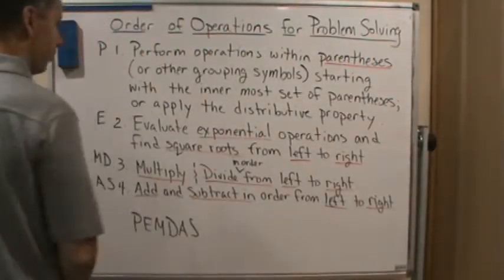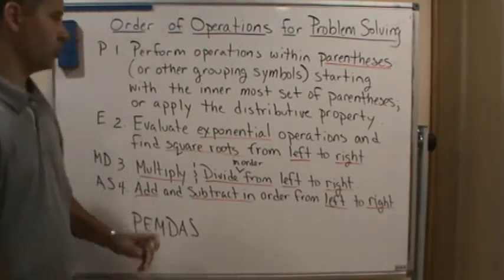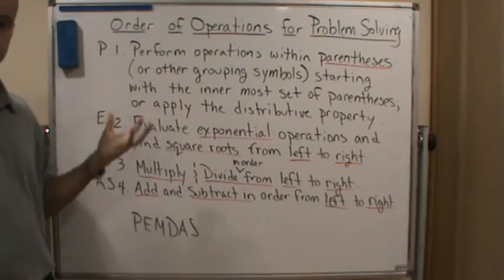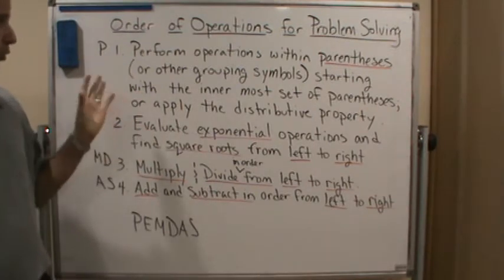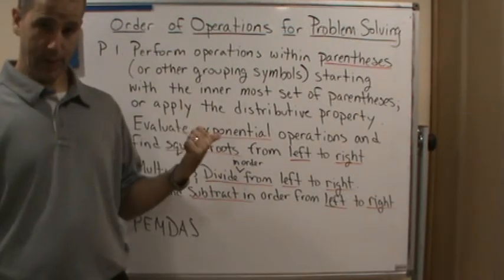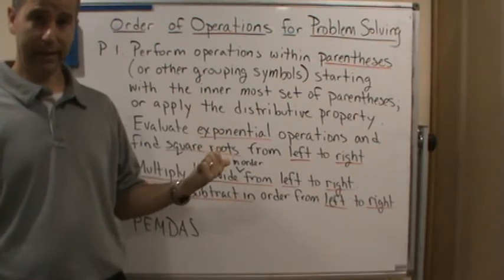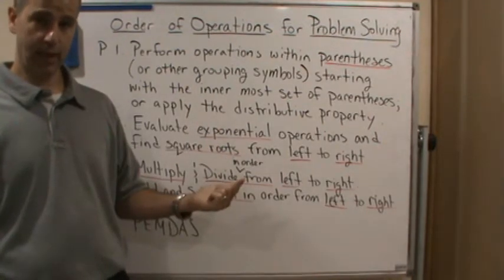So what are the operations? You start with parentheses or grouping symbols. So grouping symbols are not only parentheses and brackets, but also absolute value signs - those are also grouping symbols.